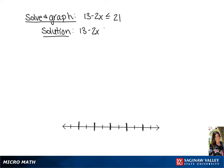We have 13 minus 2x is less than or equal to 21. We're going to subtract 13 from each side, giving us negative 2x is less than or equal to 8.